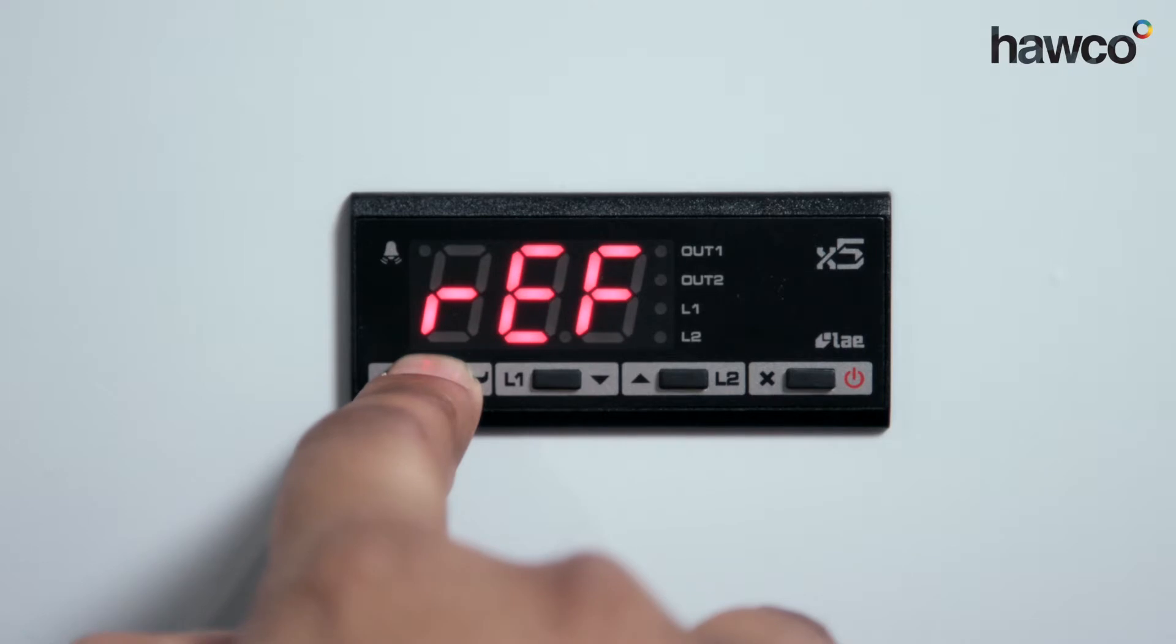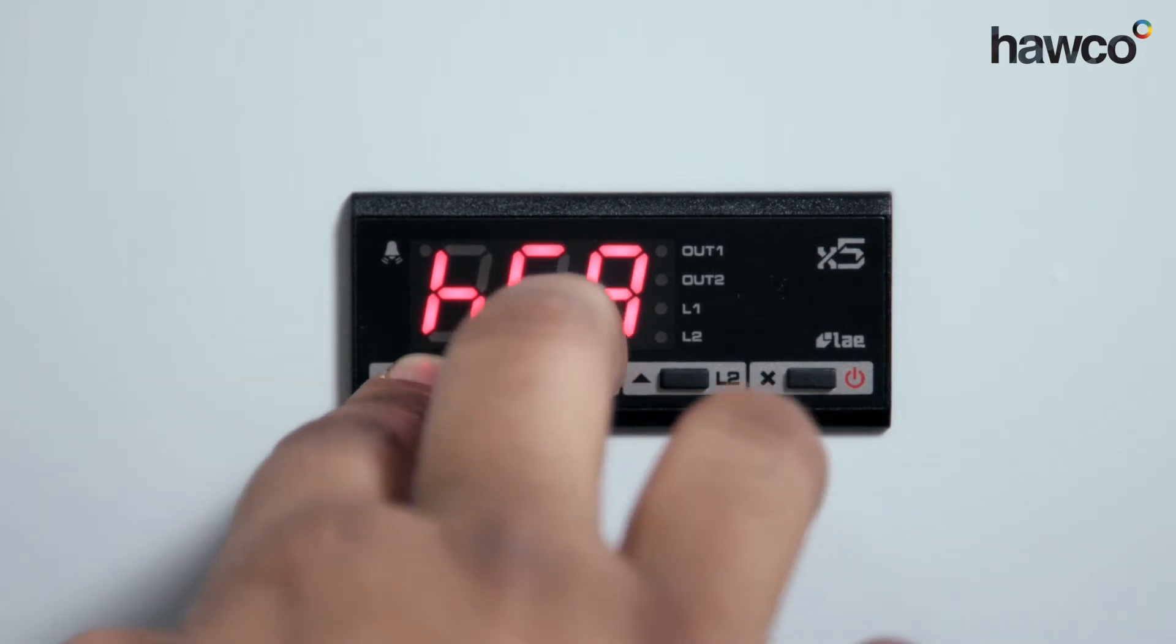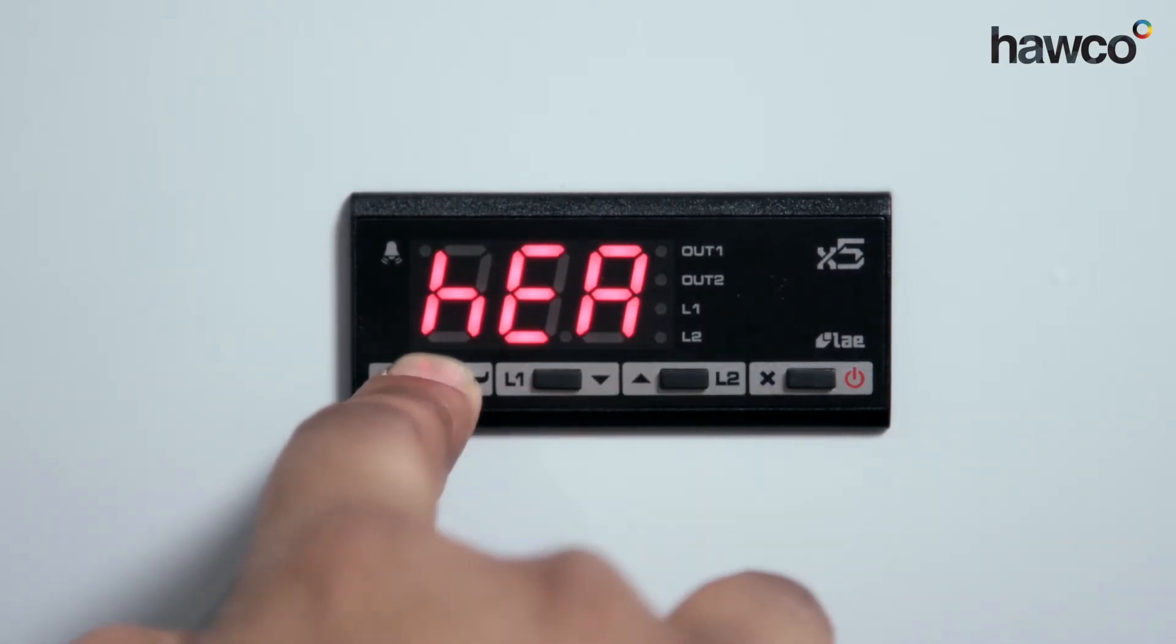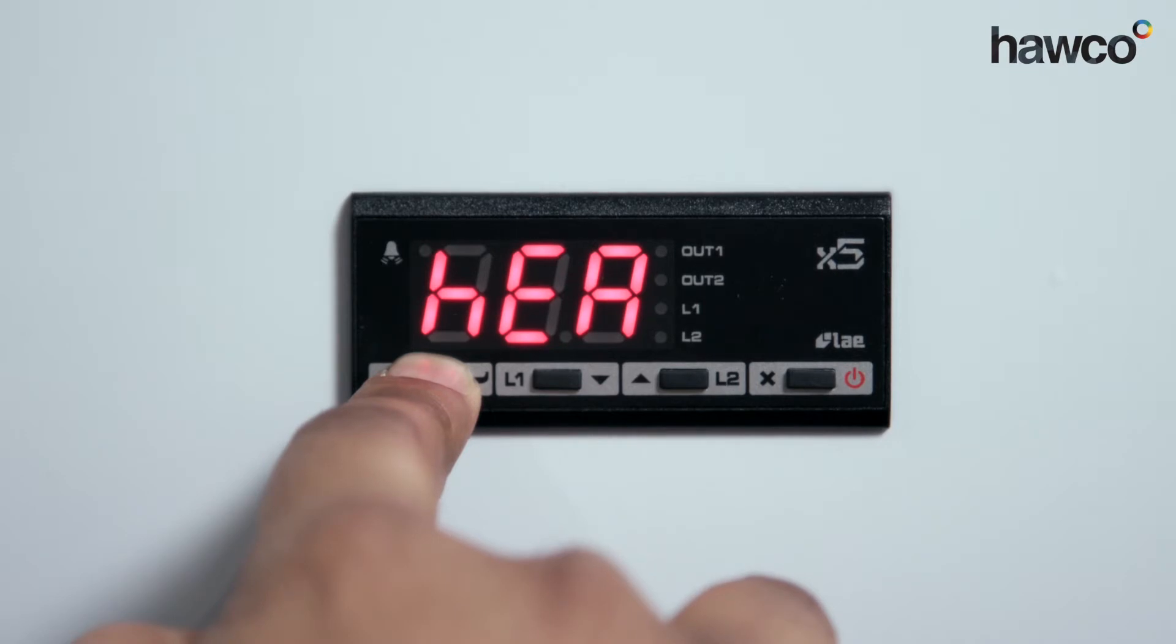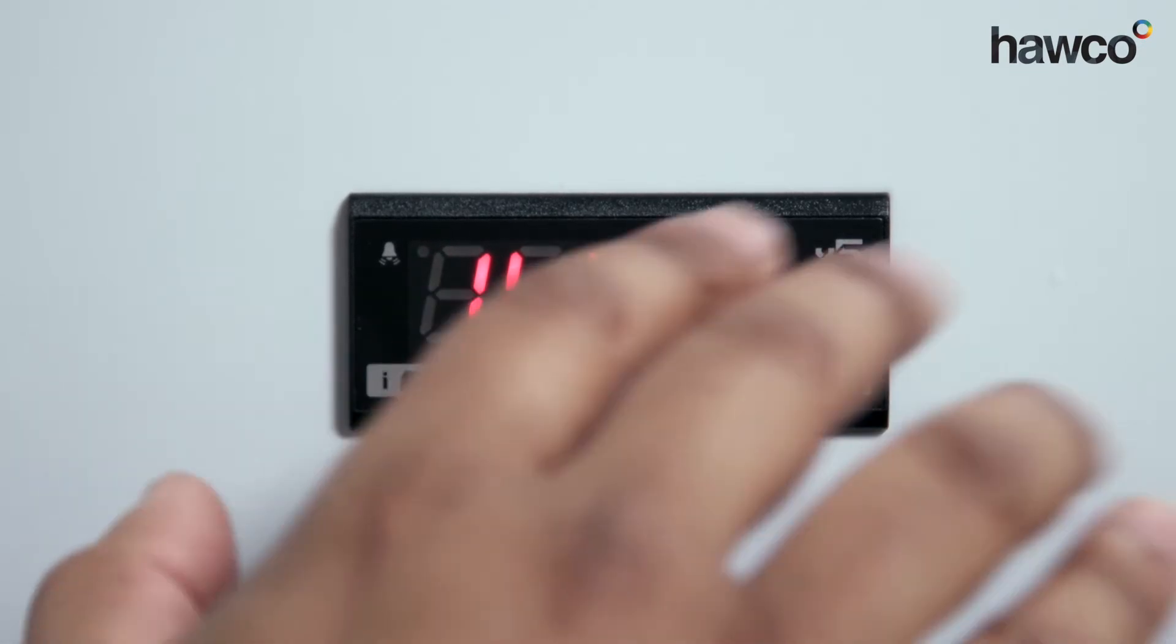So we push and hold the I button to choose. As you can see, it's set to refrigerator. We push the up button to go to heater. If you want to change at any point, you can always go back down to refrigerator. With this one we're going to keep it at heater. We're going to let go of the I button. Now that's saved in.